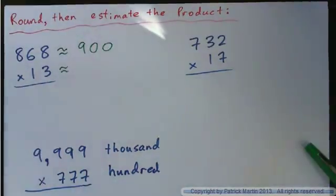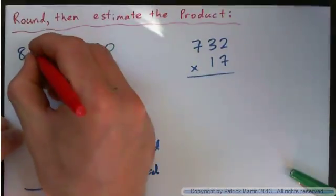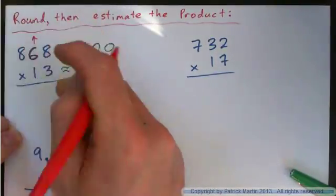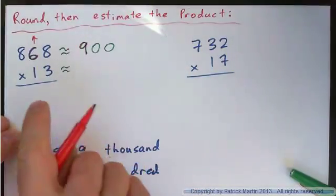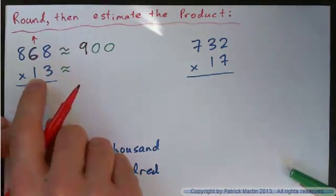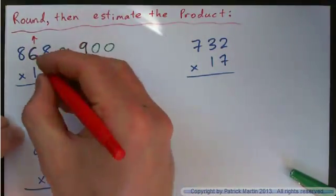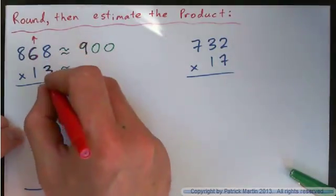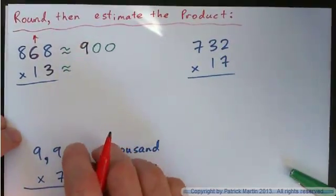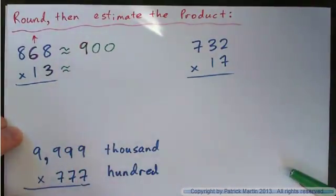Once again, the number after the eight is a six. That's why we rounded up to get nine here, right? 900. So the number after the, you'd round this guy to the nearest ten, basically, right? So the number after that is a three, so you round down to ten.